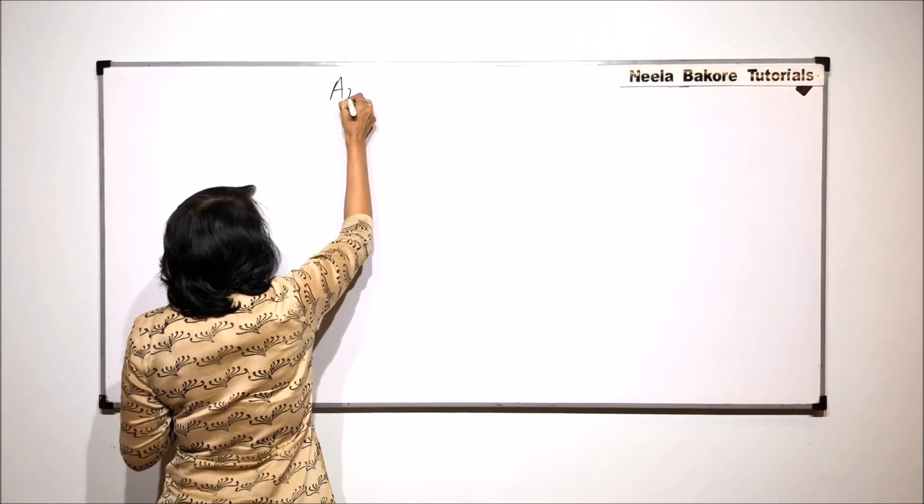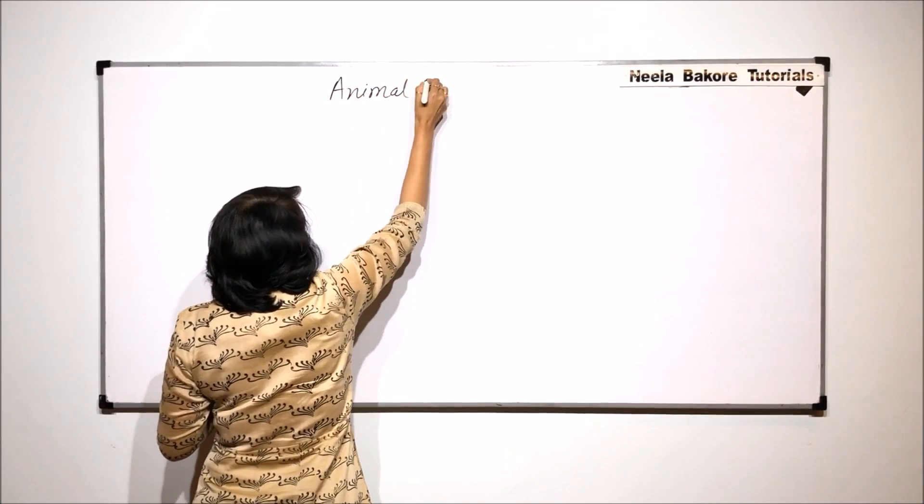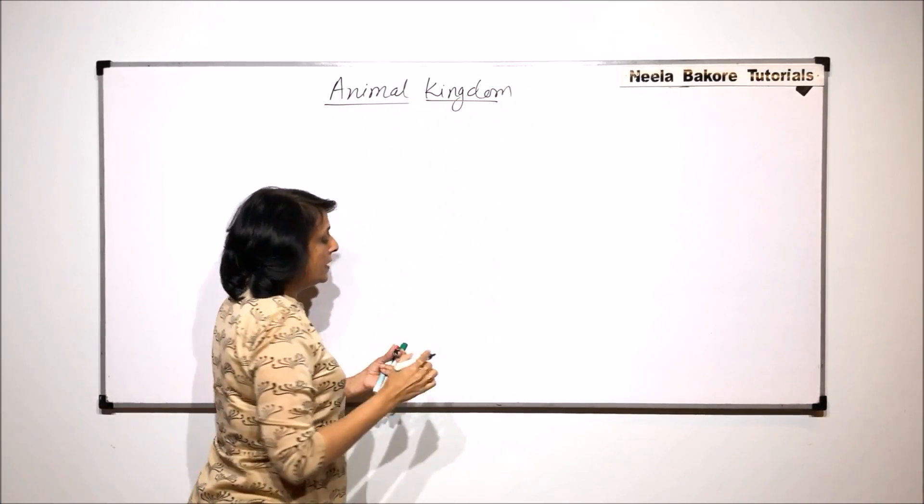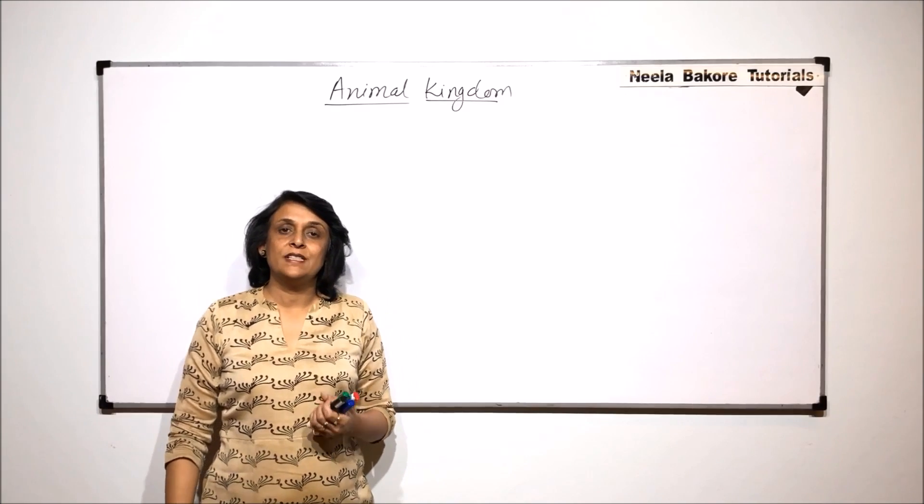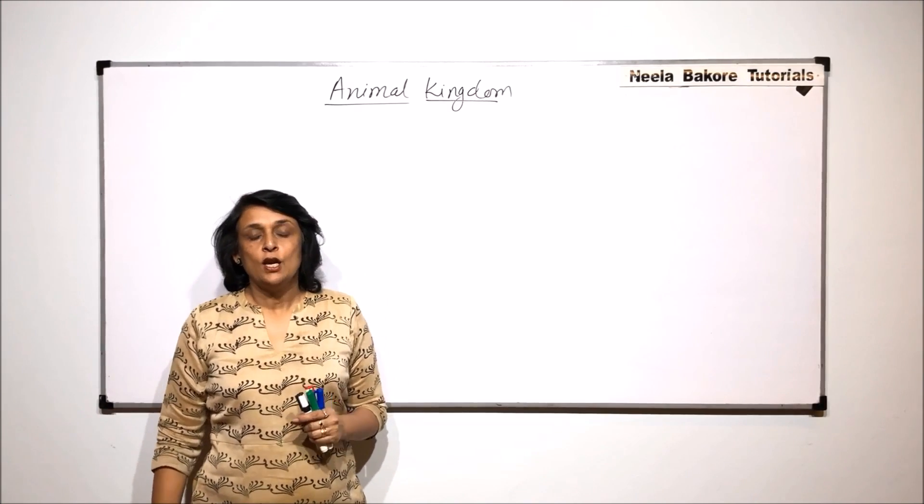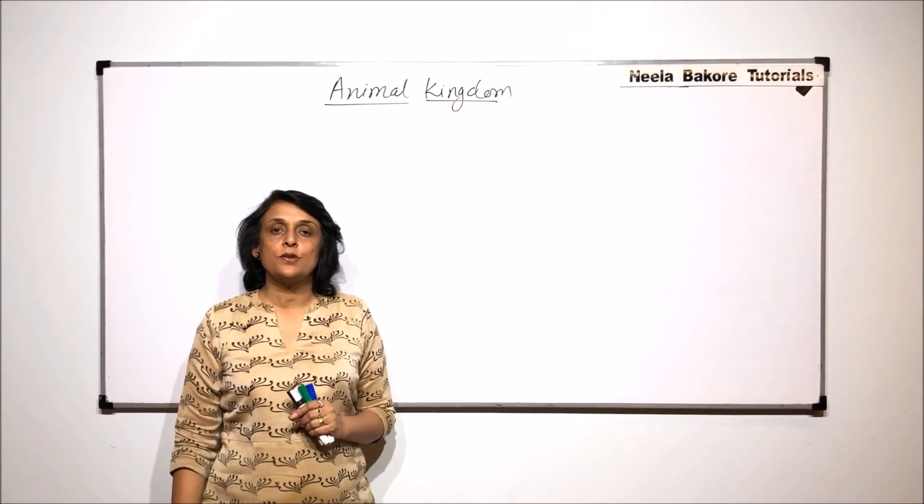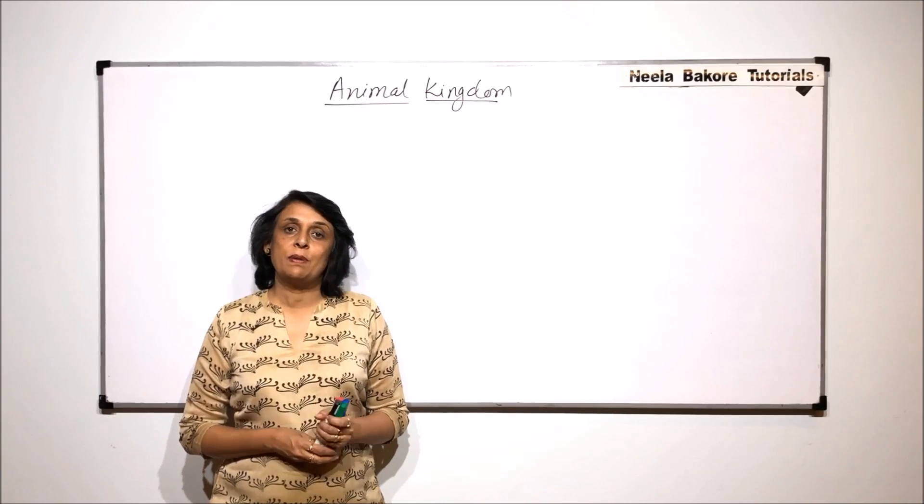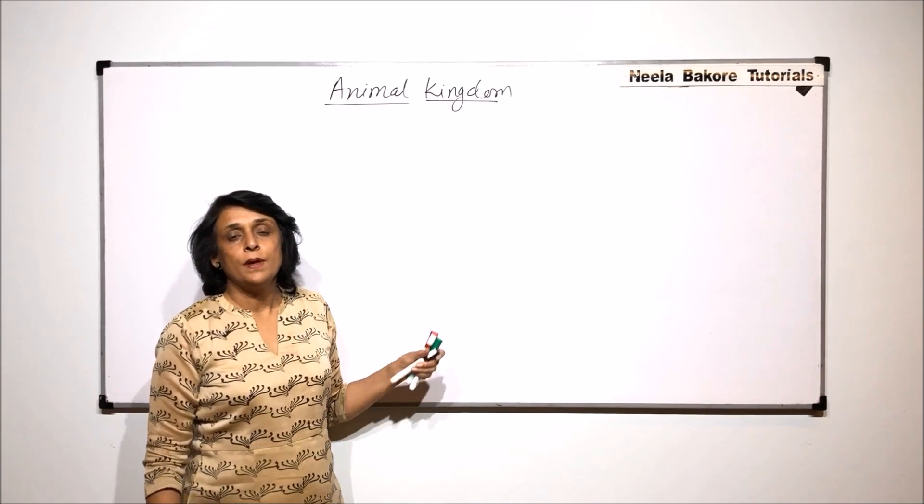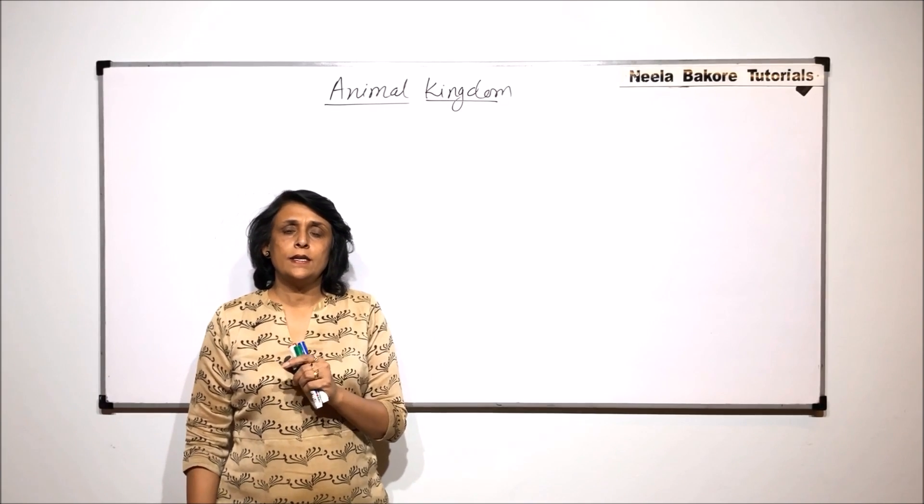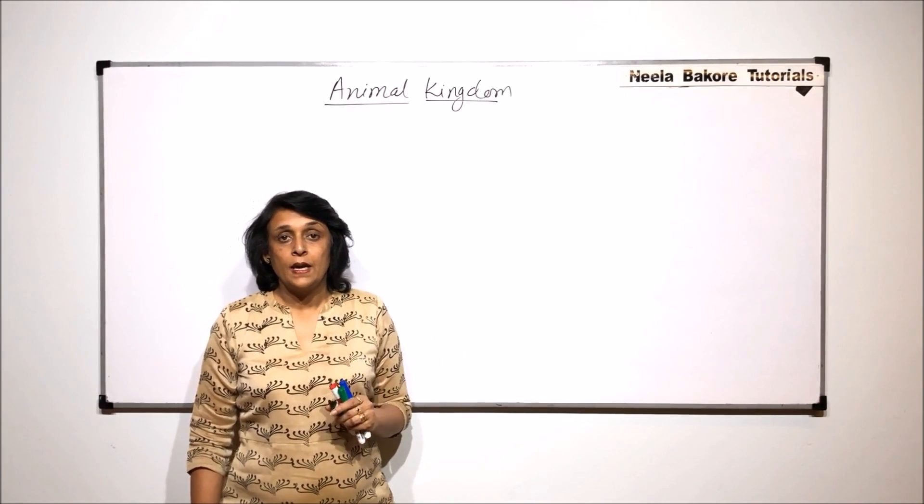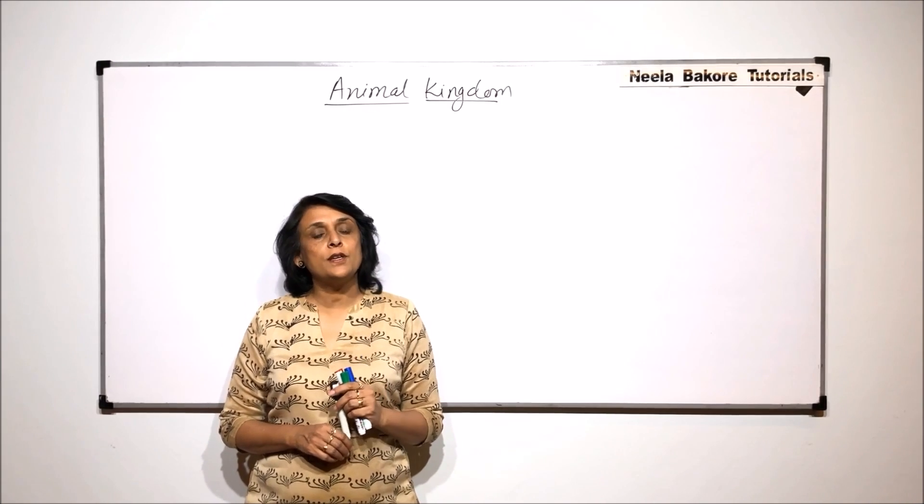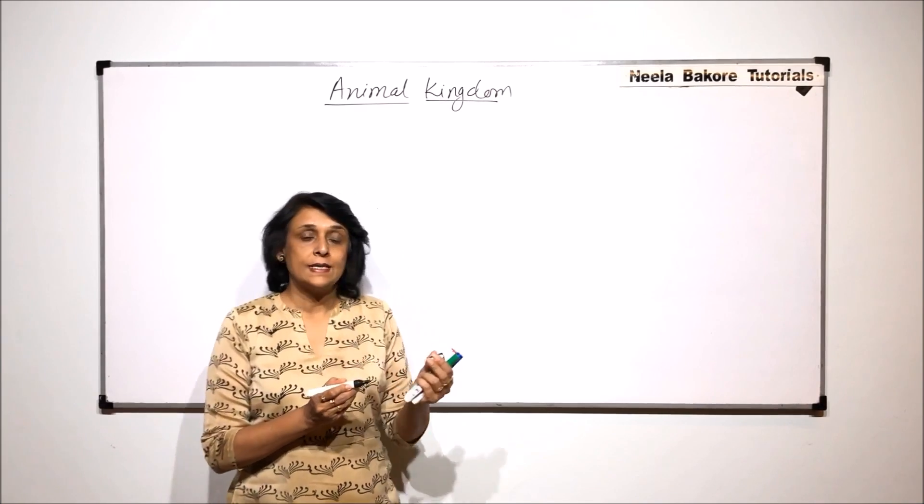And in this Animal Kingdom, we need to talk about the variations, the diversity which is seen. So we will be talking about some introductory things before we actually start discussing the phylums and the examples or the animals which are placed in these phylums. Animal Kingdom is full of diverse forms. We will take certain parameters and study what kind of diversity or variation is seen in this Animal Kingdom.